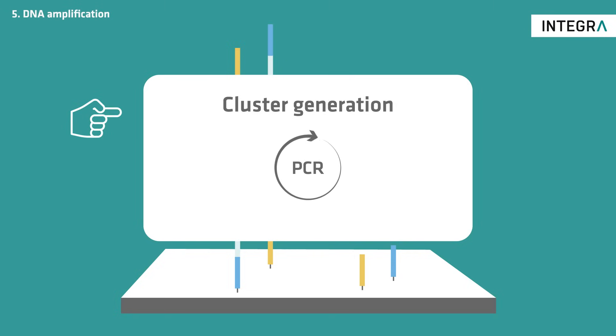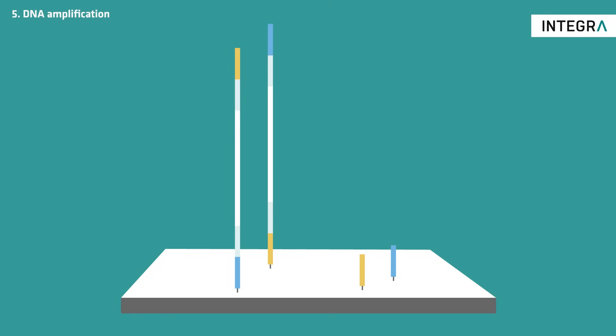To do this, several PCR cycles are performed. The capture sequences on the flow cell are used as primers.